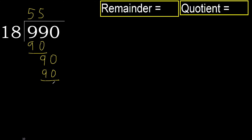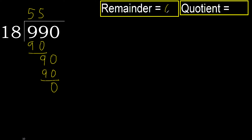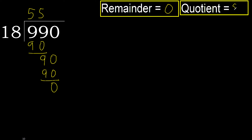Subtract 0. Next, the remainder is zero, therefore finish. 990 divided by 18 is 55.